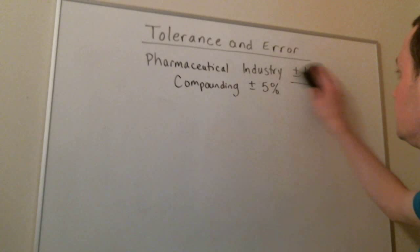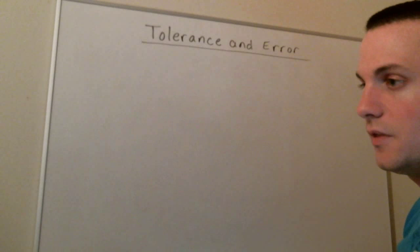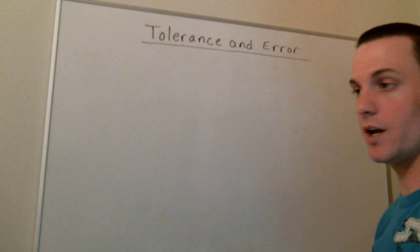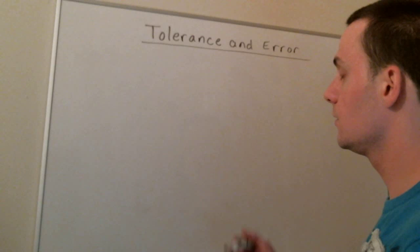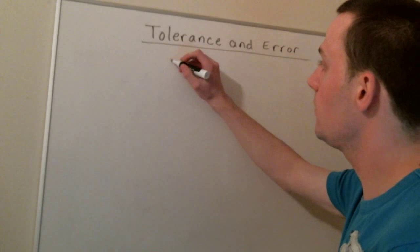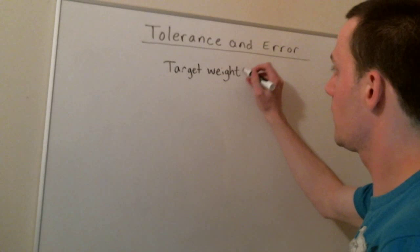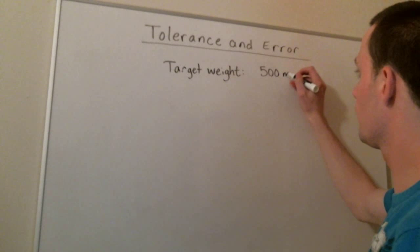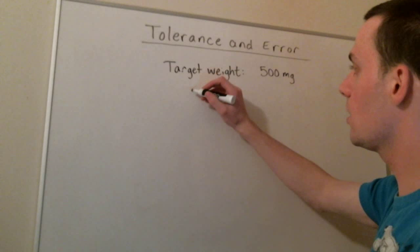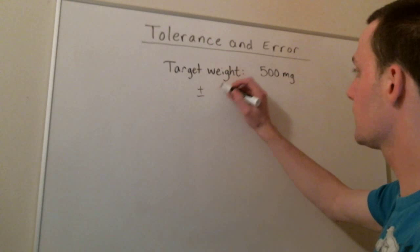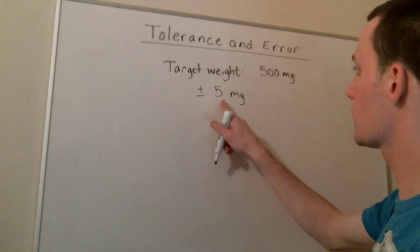Sometimes when you're compounding, you're not given the error as a percent. Instead, you're given the error as an amount. Let's say we're making capsules with a target weight of 500 milligrams, and the amount of error we'll tolerate is plus or minus 5 milligrams. What is this as a percent error?